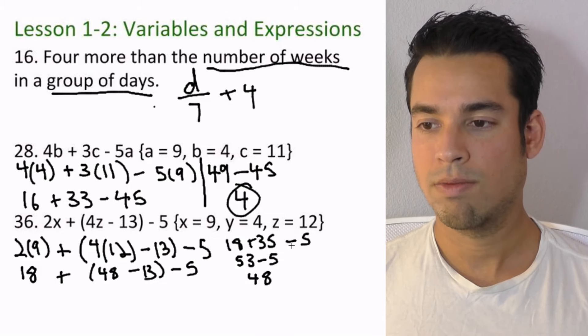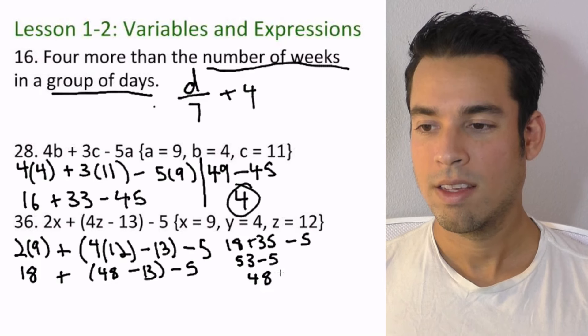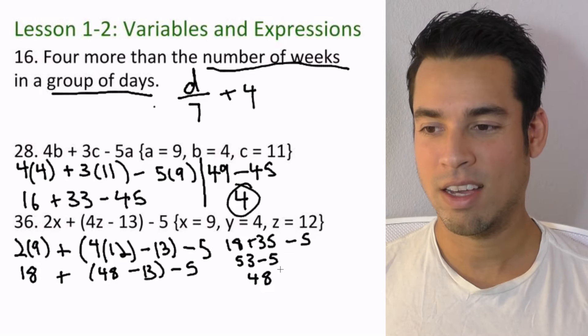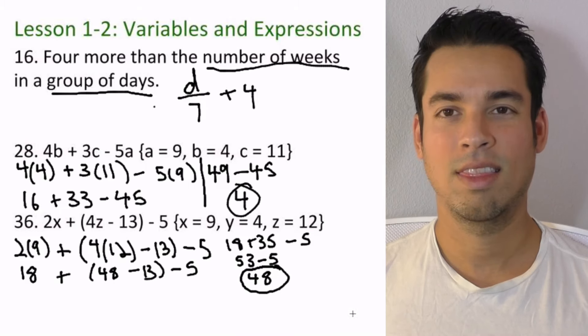Let me just double check. So we did 48 minus 13 is 35, and then we got 18, 53, 48. Yep. So I just gotta make sure doing it right here for you guys. So 48 is our final answer, and done.